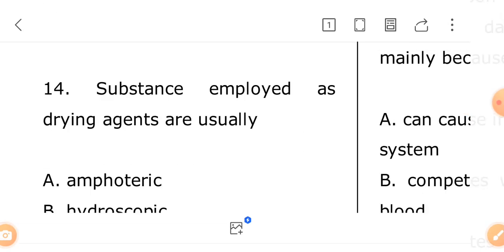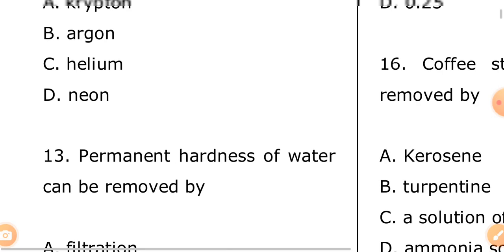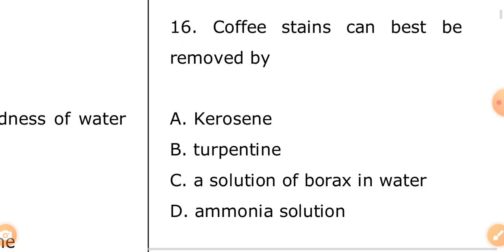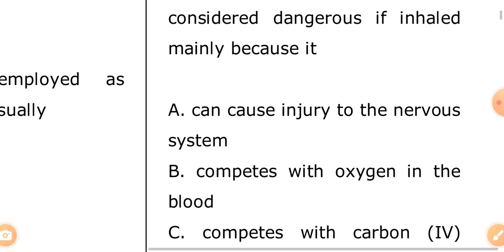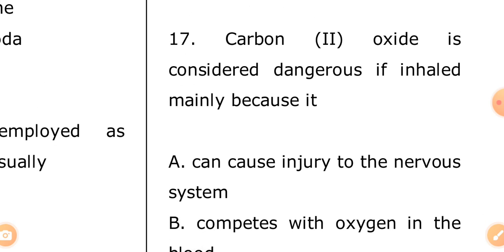Question sixteen: coffee stains can best be removed by — A: kerosene, B: turpentine, C: a solution of borax and water, D: ammonia solution. The answer is D — ammonia solution. I say don't just watch for watching sake; it takes effort to create these videos, so pay attention and keep reading.